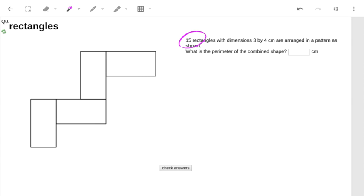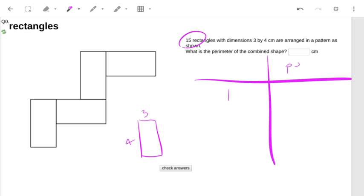Probably the best way to start is with the stuff we know. We know how to do it for one rectangle, so for just one rectangle, which I'll draw here, that's pretty straightforward. For one rectangle, the perimeter would be 14 centimeters.